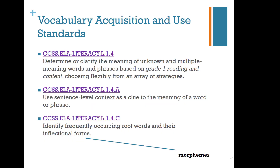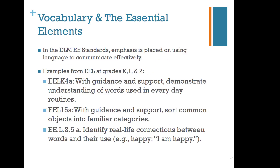Compare this with first grade — the same idea is represented: to determine or clarify meaning of unknown and multiple meaning words based on Grade 1 reading, also choosing flexibly from an array of strategies. The context here is focused on using sentence-level context as a clue to word meaning. For morphological awareness, first grade includes identifying frequently occurring root words and their inflectional forms, whereas seventh grade addressed Greek and Latin roots and affixes. For the essential elements — the extended standards for students with complex communication needs — with guidance and support, students would demonstrate understanding of words used in everyday routines, sort common objects into familiar categories, and identify real-life connections between words and their use.